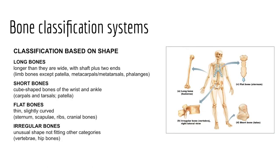Bones can also be categorized by shape: long bones, short bones, flat bones, and irregular bones. Long bones are tubular — any bone longer than it is wide — making up the limbs: humerus, radius, ulna, metacarpals, and phalanges of the upper limbs; femur, tibia, fibula, metatarsals, and phalanges of the lower limbs. Short bones are cuboidal-shaped, roughly equal in length and width — our carpals (wrist bones) and tarsals (ankle bones).